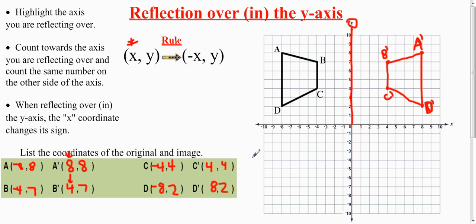That is another way you can do it. Instead of counting, you can use the rule if you remember it. For reflection over the y-axis, the x changes its sign. For reflection over the x-axis, the y is the one that changes its sign. That's it for reflection over the y-axis.